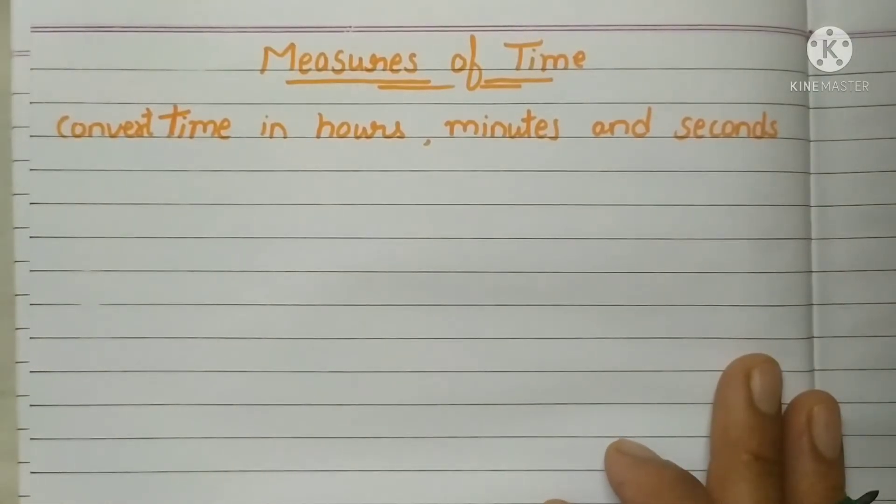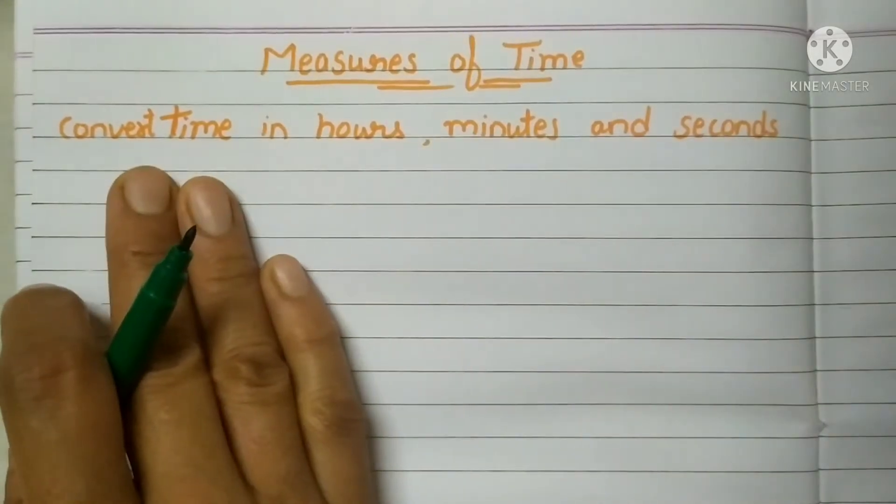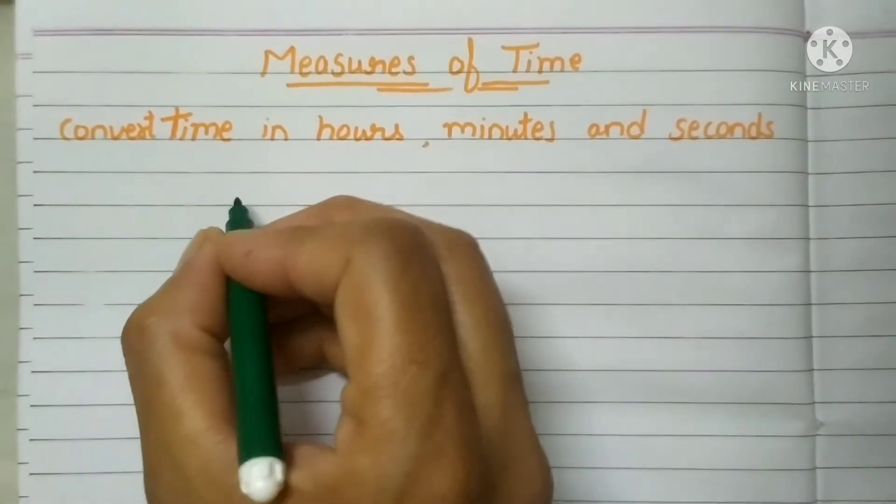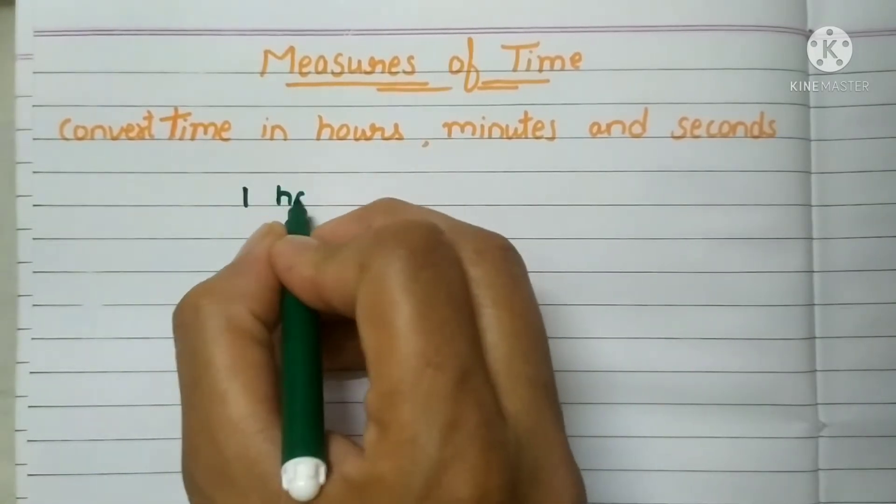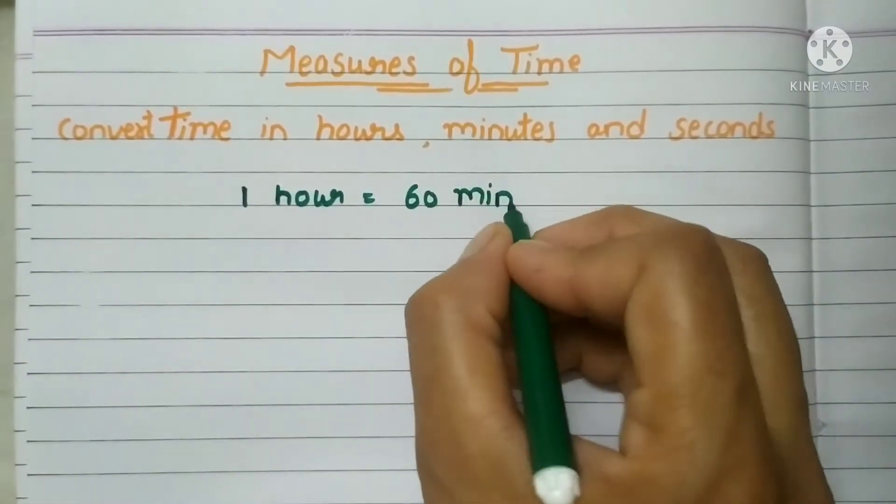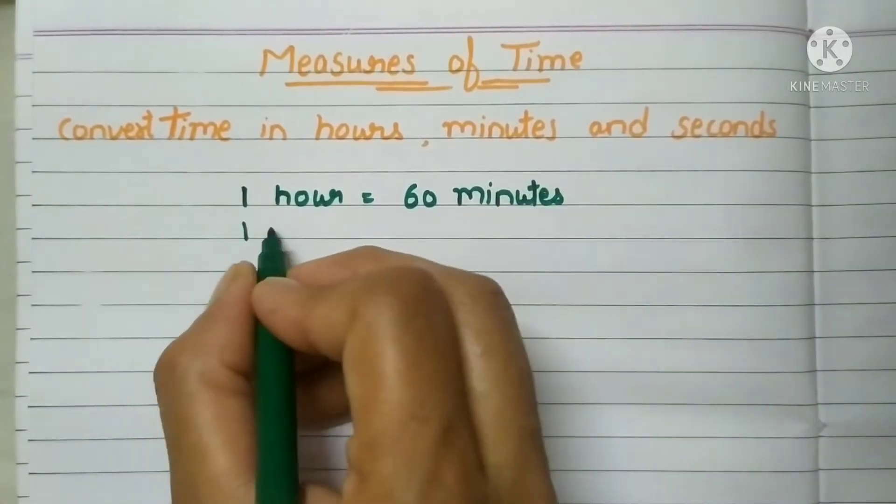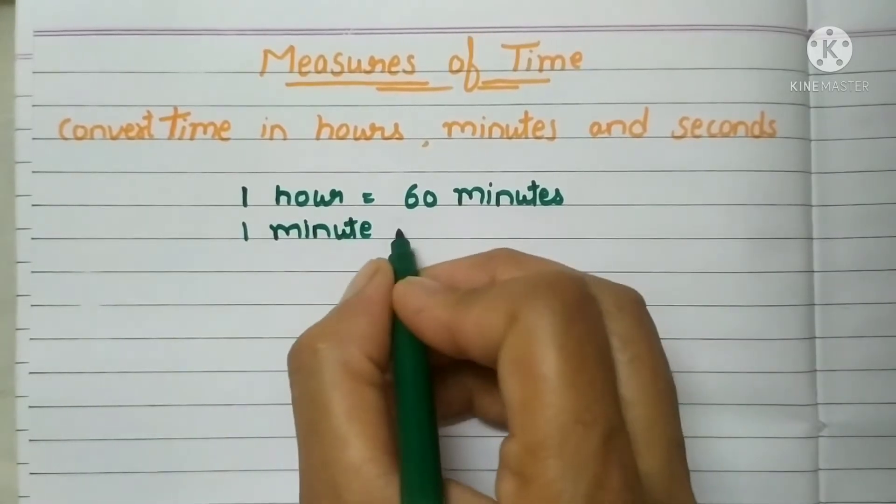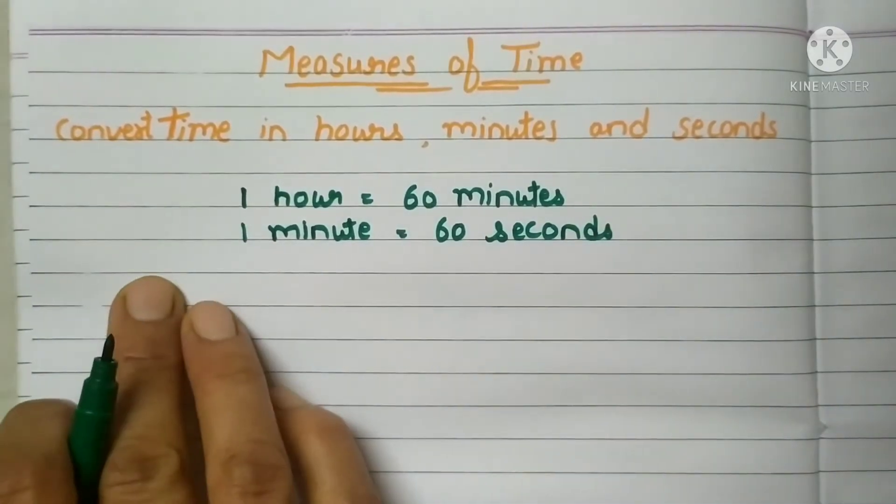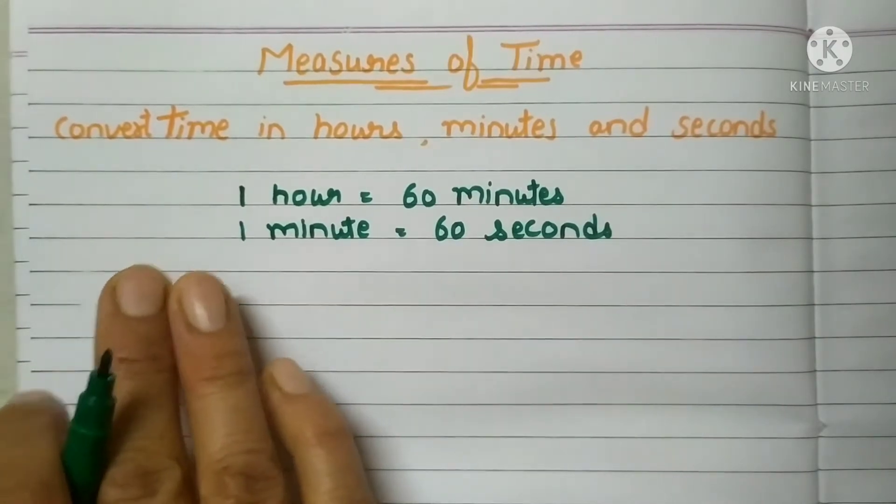Hello and let's start our today's maths topic, that is convert time in hours, minutes and seconds. We have understood how to read a time, and in today's video we will understand how to convert hours into minutes and minutes into seconds. We know very well that in 1 hour there are 60 minutes and in 1 minute there is 60 seconds.